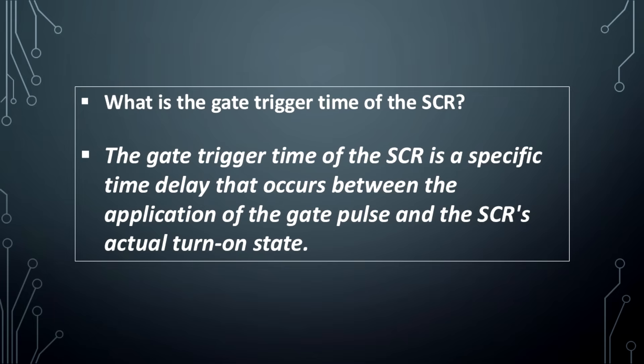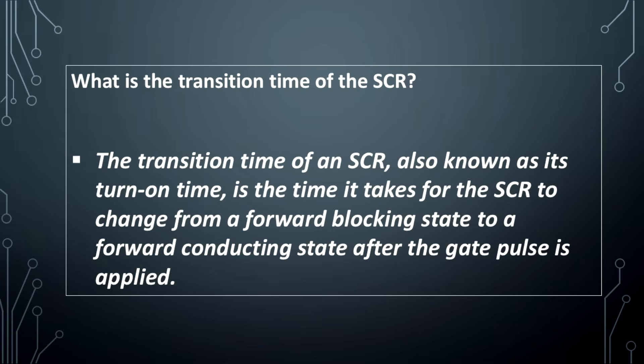What is the gate trigger time of the SCR? The gate trigger time of the SCR is a specific time delay that occurs between the application of the gate pulse and the SCR's actual turn-on state. What is the transition time of the SCR? The transition time of an SCR, also known as its turn-on time, is the time it takes for the SCR to change from a forward blocking state to a forward conducting state after the gate pulse is applied.